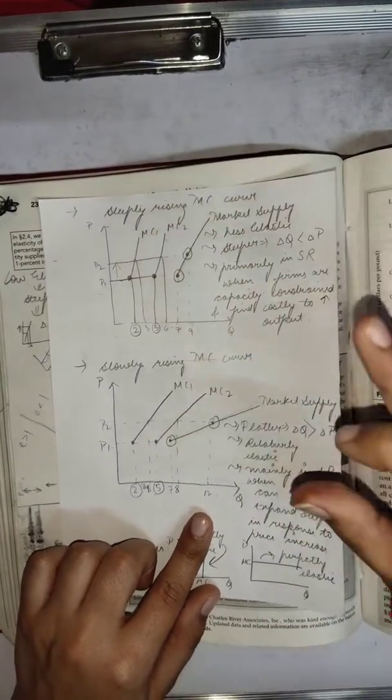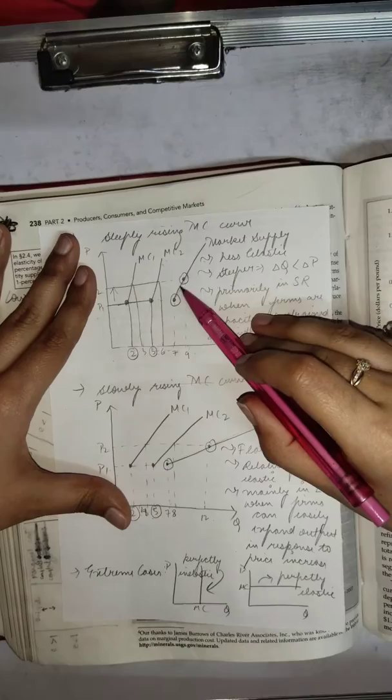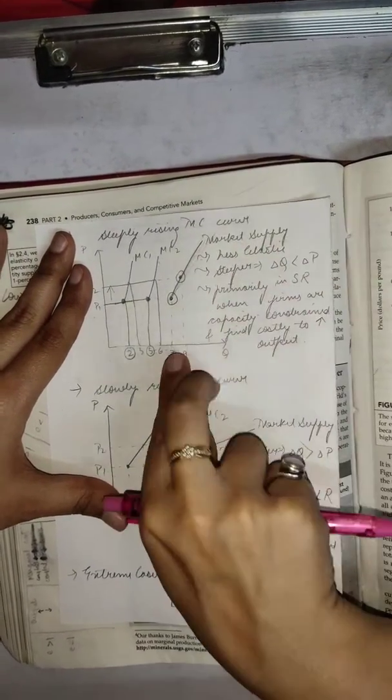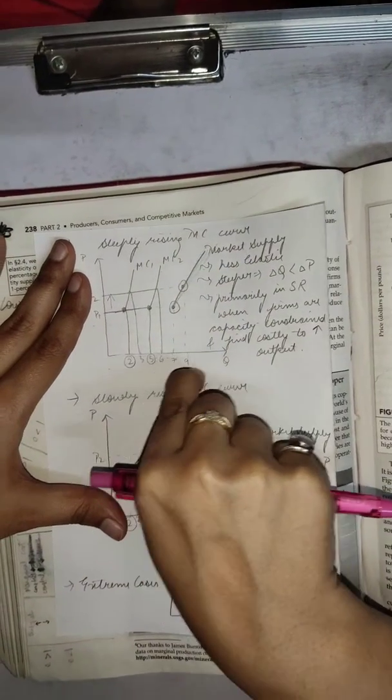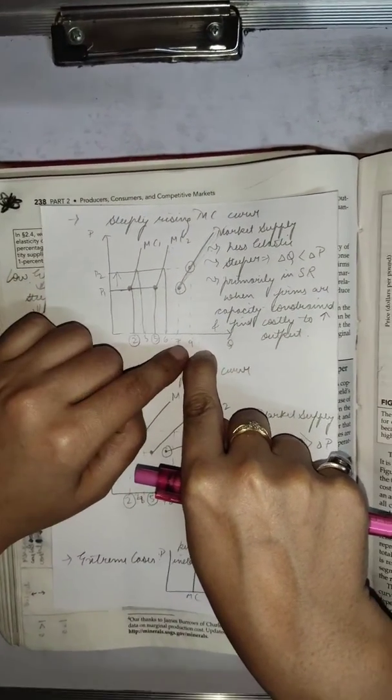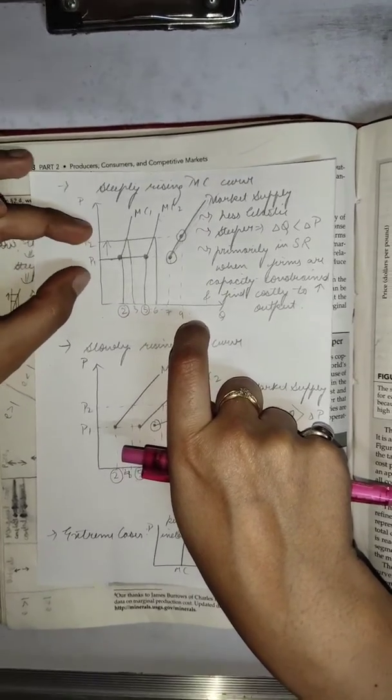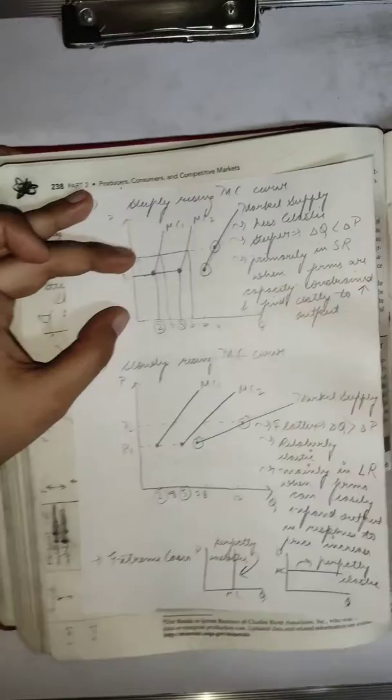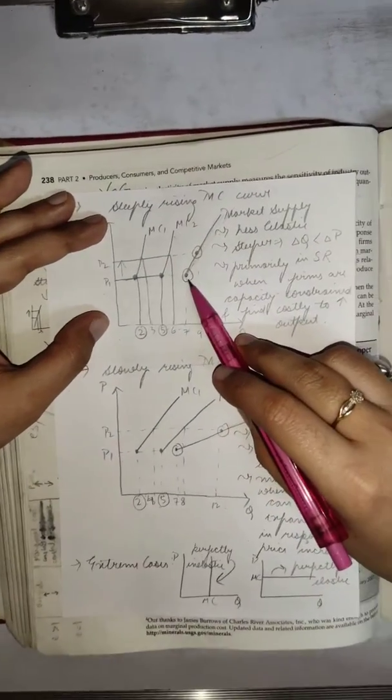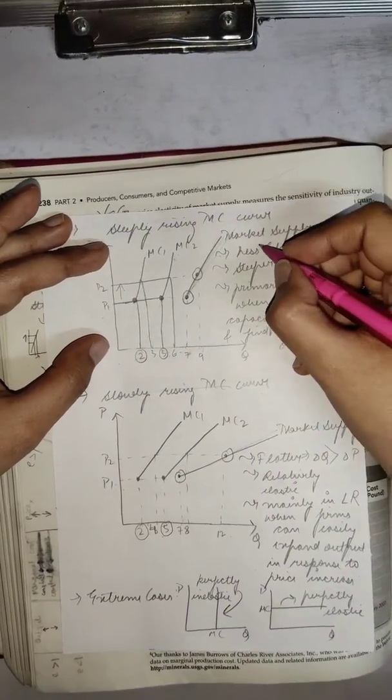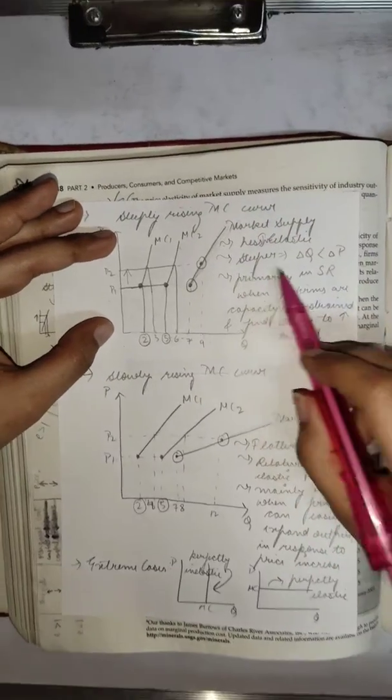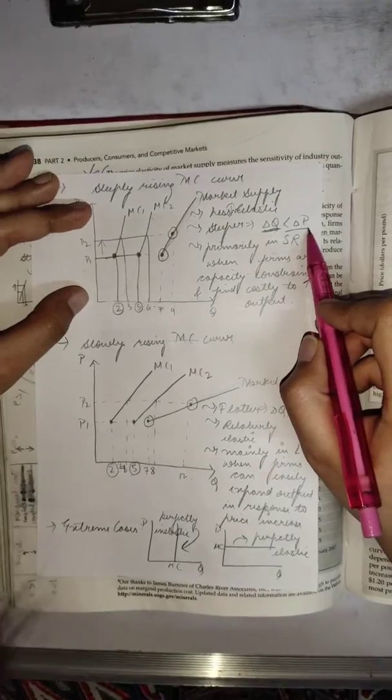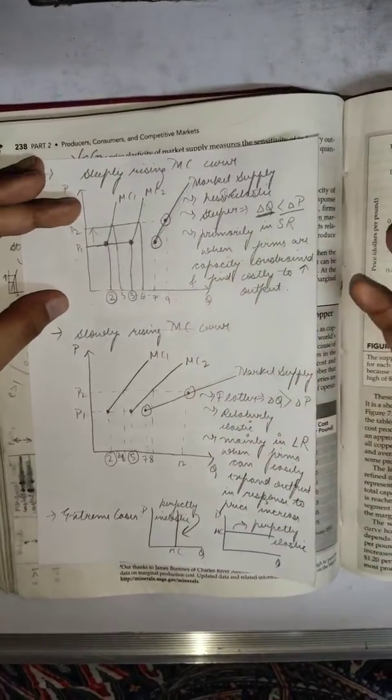Let's compare the observations. Here the observation is this is less elastic because this is steeper. Steeper means percentage change in quantity along the x-axis is actually weaker than the percentage change in price along the y-axis. That is the meaning of elasticity being smaller. Relatively inelastic means that percentage change in quantity is lower than the percentage change in price. This happens primarily in short run.